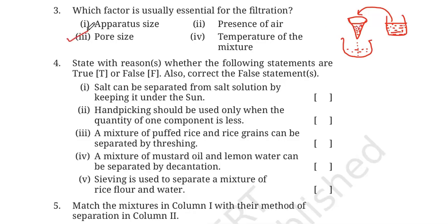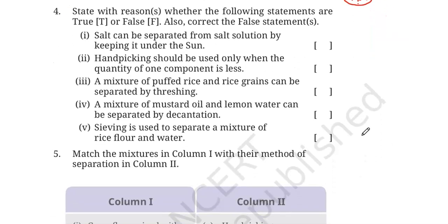So the essential factor in filtration is the pore size of the filter paper. That is the correct answer. Number four: State reasons whether the following statements are true or false, and correct the false statements. Statement one: Salt can be separated from salt solution by keeping it under the sun — that is true. Because of evaporation, the water will evaporate and the salt will remain.